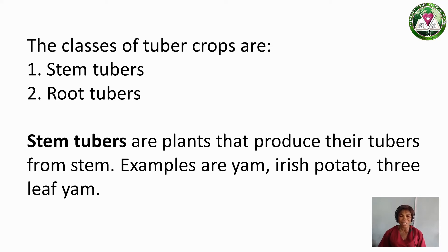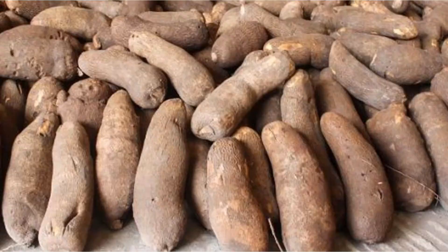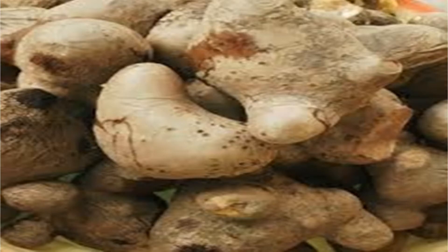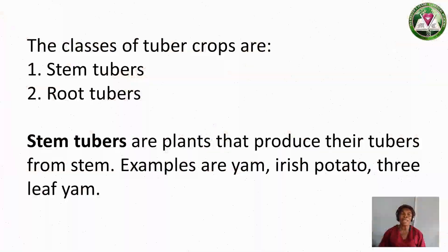Stem tubers are plants that produce their tubers from the stem. Examples of stem tubers are yam, Irish potato, and tree leaf yam. Tree leaf yam is known in Igbo as well. I repeat: examples of stem tubers are yam, Irish potato, and tree leaf yam.